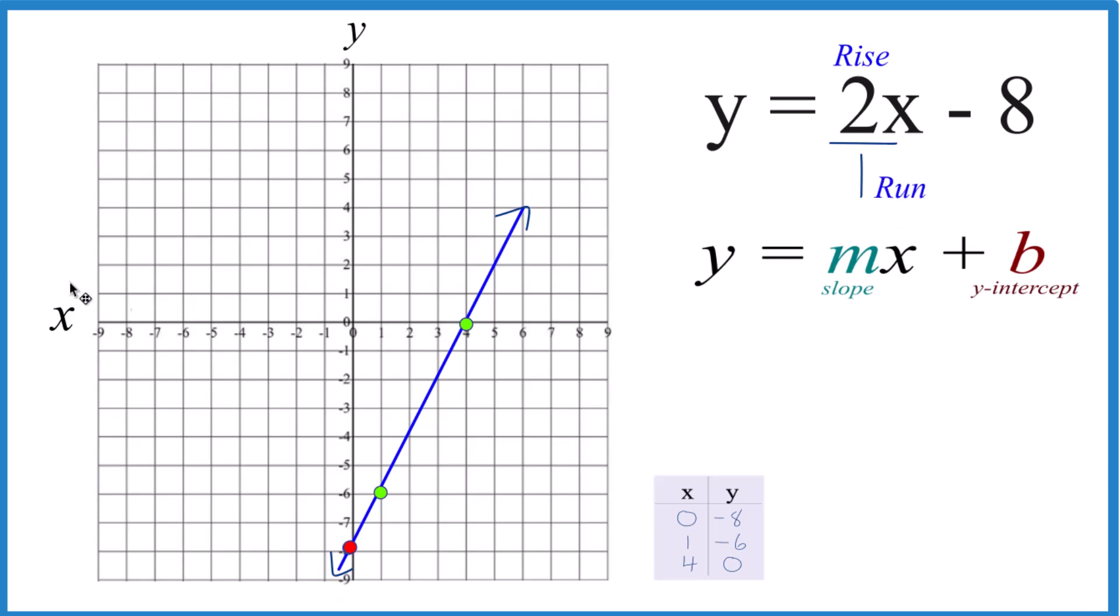Then we go to our y-intercept. We rise 1, 2, run 1. Rise 1, 2, run 1. And you can just keep doing this, and you can see all of these points there on our line here for y equals 2x minus 8.